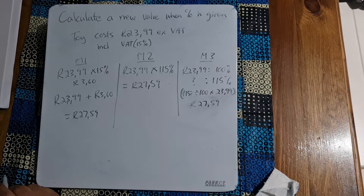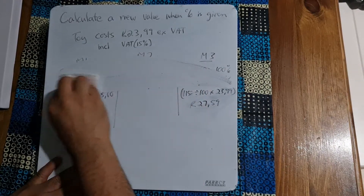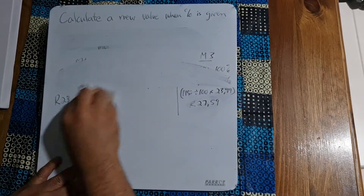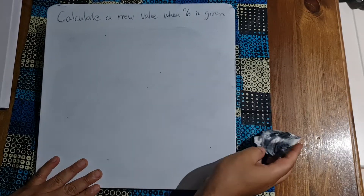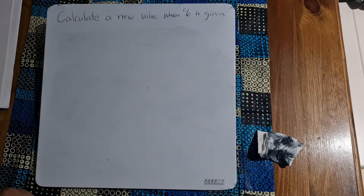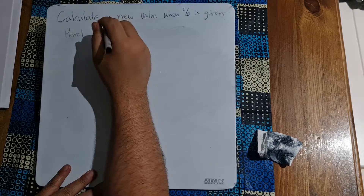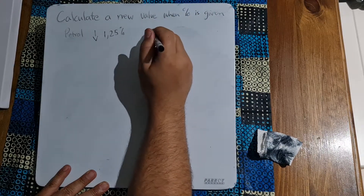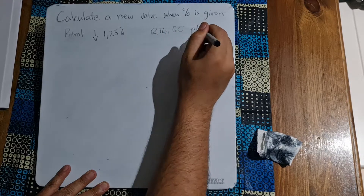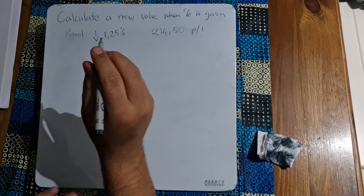Let's look at one or two examples before we close off. Our first example is the petrol price, and the petrol price is going down by 1.25%. If we were paying R14.50 per liter, how much will we actually be paying now? Remember, the price has gone down by 1.25%.